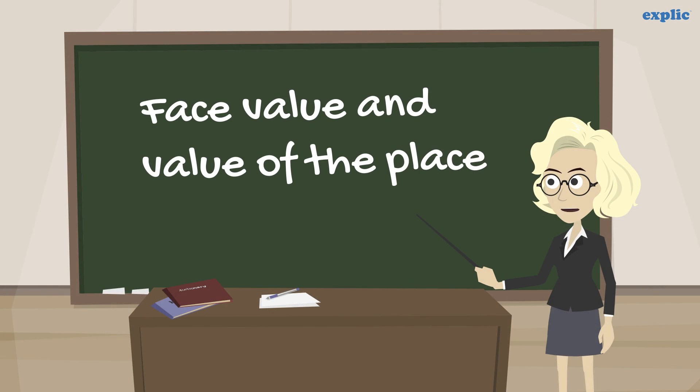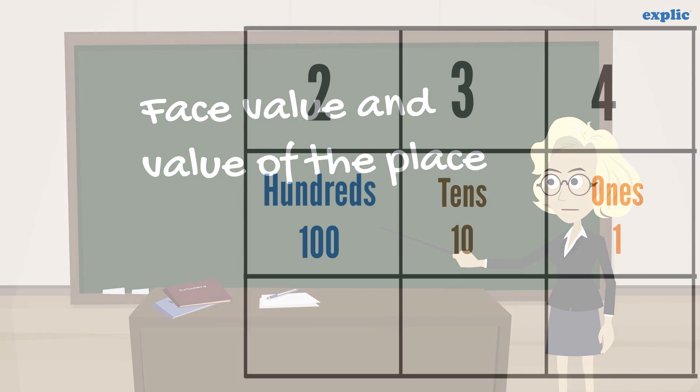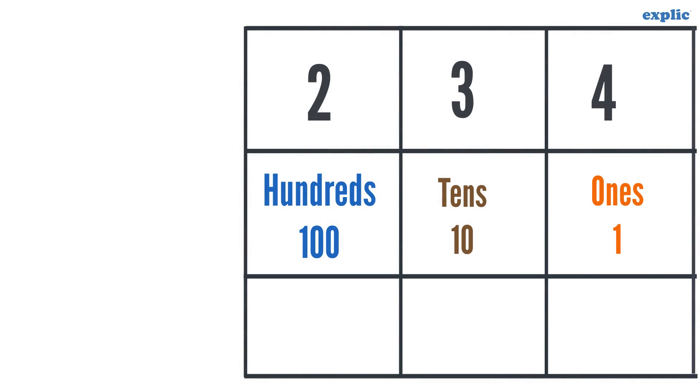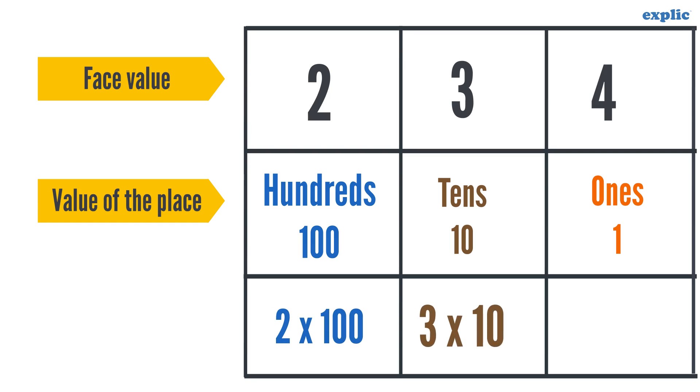Face value and value of the place. The face value of a digit in a number is the digit itself. Hundreds, tens and ones are called value of the place. If we multiply face value and the value of the place, we get place value of the digit.